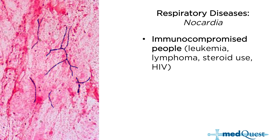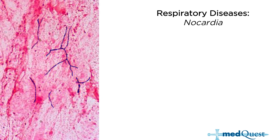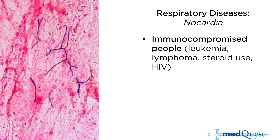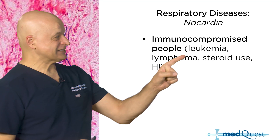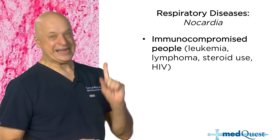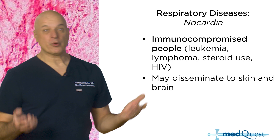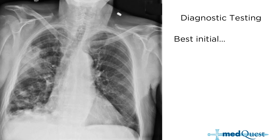Nocardia is always in immunocompromised people — it does not exist in the normal host. No one normal has Nocardia in their sputum. The immunocompromised states we're talking about involve lymphocyte and neutrophil abnormalities: HIV (lymphocyte), steroids (lymphocyte and neutrophil). Besides the lung, it also goes to brain and skin.